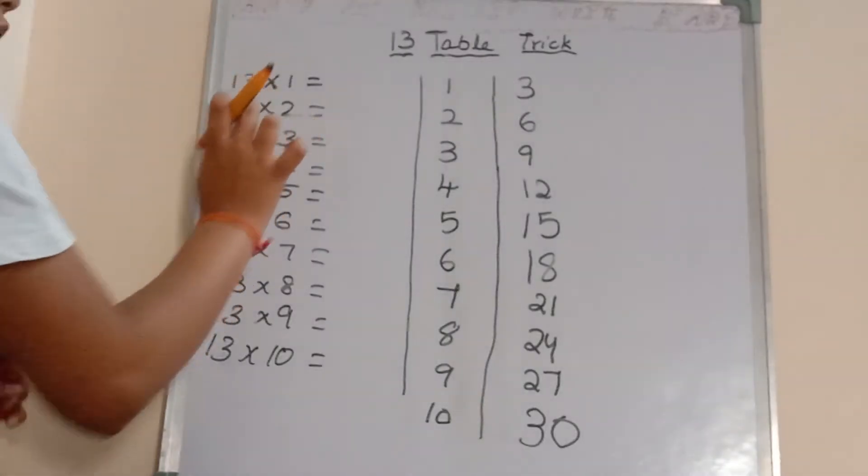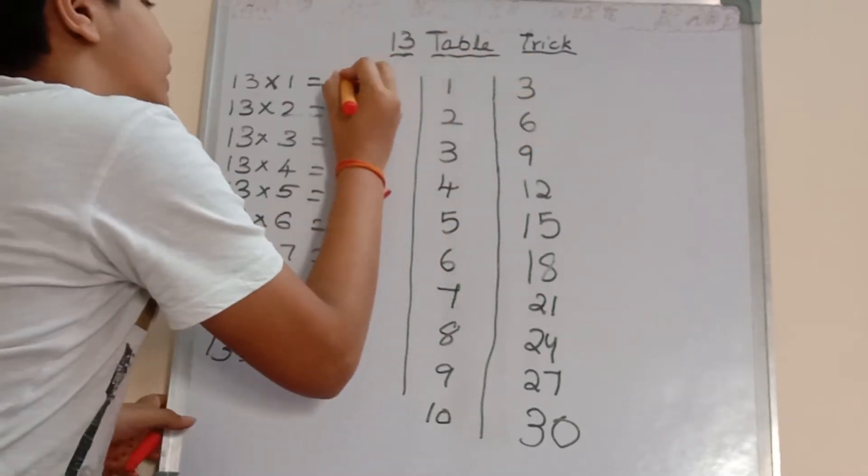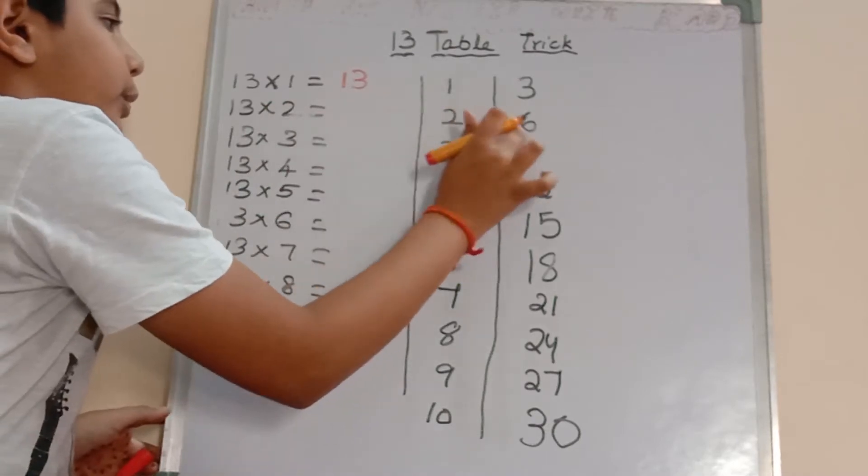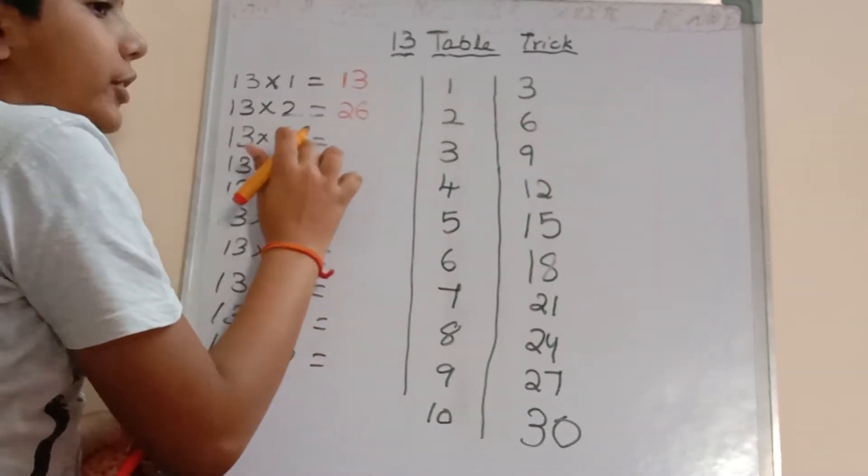Now we will write the 13 table. 13 ones are - we will write the 1 and 3 here - 13. 13 twos are 26. 13 threes are 39.